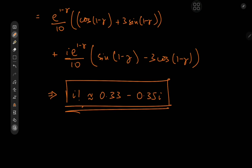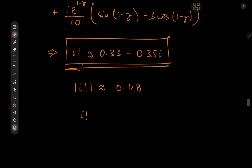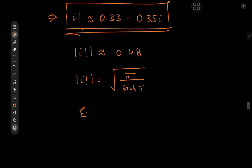And by the way, for my calculations I actually approximated the Euler-Mascheroni constant as 0.58, for which I feel terrible, but at this point the approximations have accumulated to where I shouldn't even care anymore. This is our approximation for i factorial. How good is it? My calculations yield an absolute value of 0.48, whereas the exact value of |i!| = sqrt(pi/sinh(pi)) gives 0.52 for the first couple decimal places. So the error in our approximation is around the 8% mark.